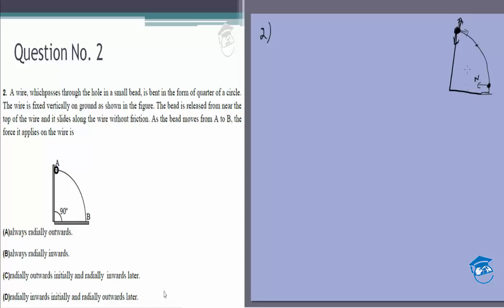It seems to us that it should be either C or D because initially the normal is radially outwards and finally the normal is radially inwards. Let's just try to solve it regularly at any random point theta. Let's assume this is the normal force radially outwards.